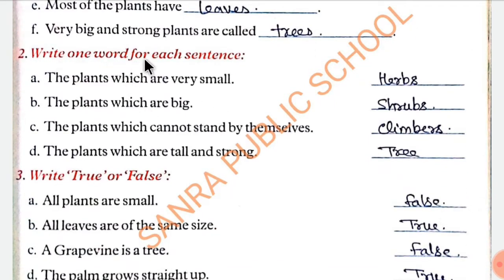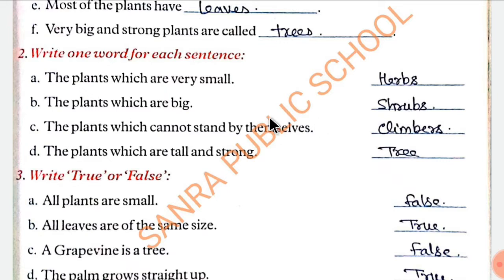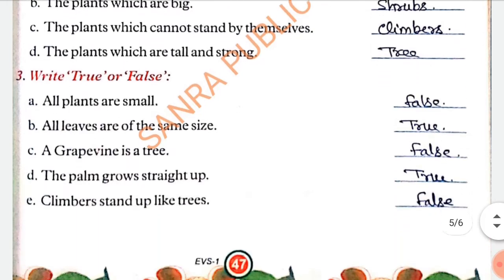Write one word for each sentence. Plants which are very small — they are called herbs. Plants which are big but smaller than trees — they are called shrubs. Plants which cannot stand by themselves — they are called climbers. Plants which are tall and strong — they are called trees.